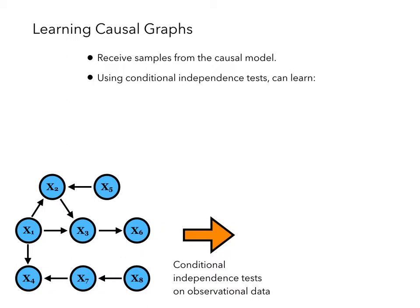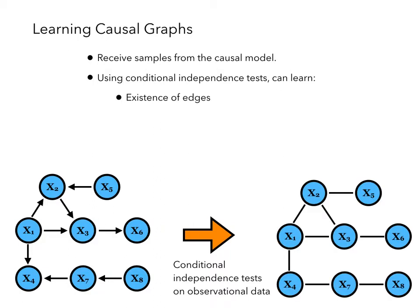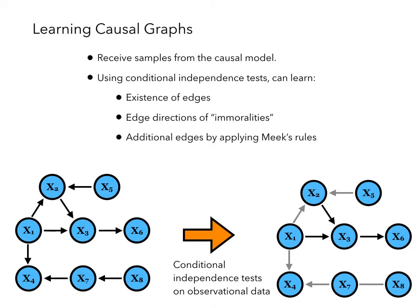In this work, we consider learning causal graphs. We start out receiving samples from the causal model. Now using conditional independence tests, which check if two variables are independent conditioned on some other set of variables, we can learn the existence of edges, the direction of edges that make up a certain structure called an immorality, and additional edges by applying what are called Meek's rules. The remaining undirected component of the graph is always a chordal graph, which is a special type of graph.